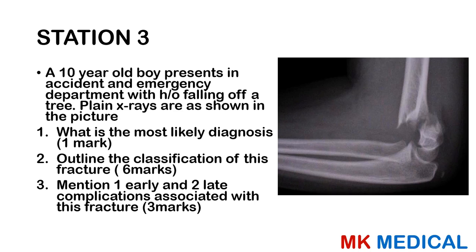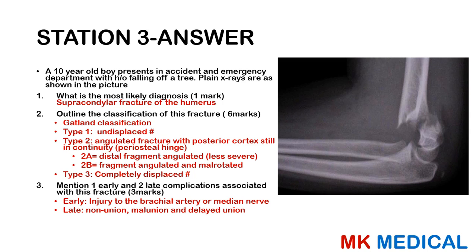This is a supracondylar fracture of the humerus. Comment below which type you think it is. We have the Gartland classification: Type 1 is undisplaced; Type 2 is angulated with the posterior cortex intact — Type 2a is angulated distally (less severe), Type 2b is angulated and mal-rotated (more severe); Type 3 is complete displacement. Early complications include risk of injury to the brachial artery and the median nerve. Late complications include non-union, mal-union, delayed union, and contractures.